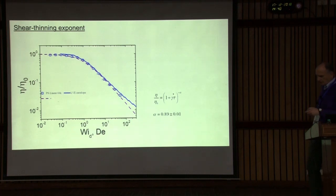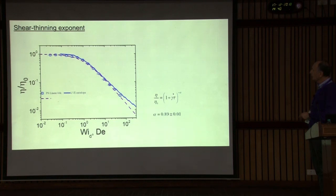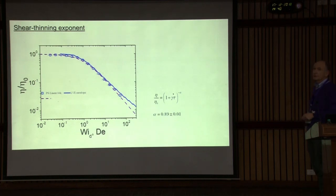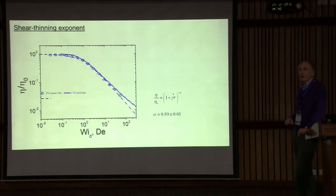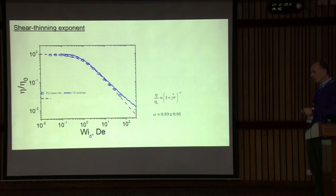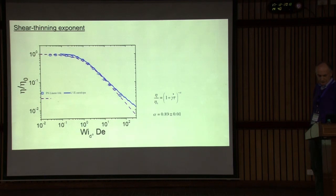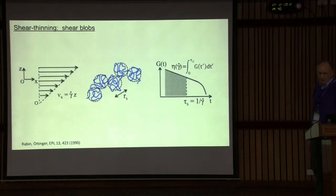One can fit with a simple empirical model the steady shear data and extract the thinning exponent. Typically the thinning slope is below one — if it is one, that relates to shear banding or maybe wall slip. Typically for polymers it's between 0.8 and 0.9. A way to think about shear thinning is to use Rubi's shear blob model. The idea is that the chain consists of different segments called blobs, and the characteristic relaxation time of each blob is the inverse shear rate.